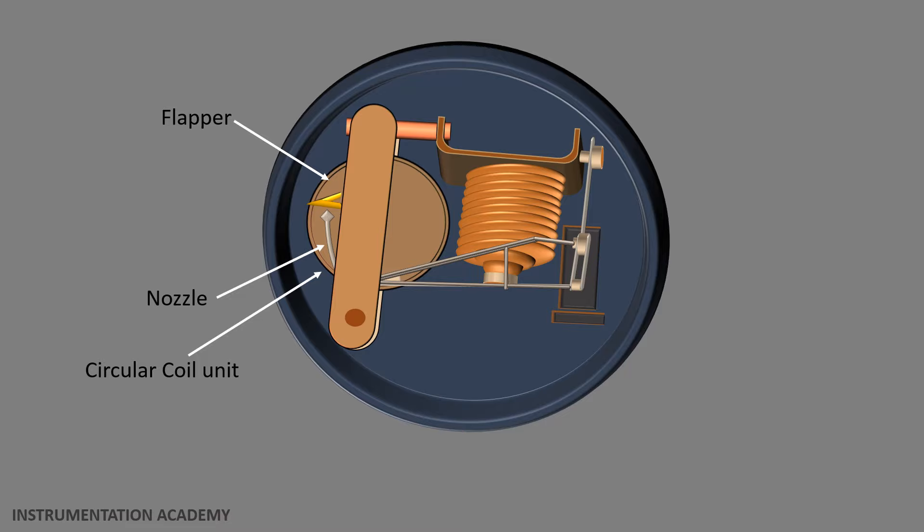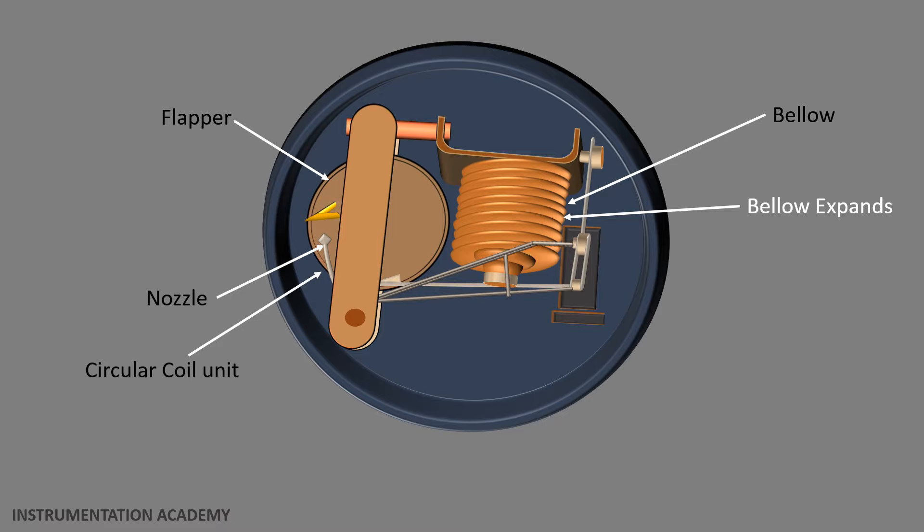The nozzle faces this flapper, so when the flapper begins to move towards the nozzle, back pressure within the nozzle rises. This rising pressure is amplified by a relay and its output pressure is applied to a bellows.